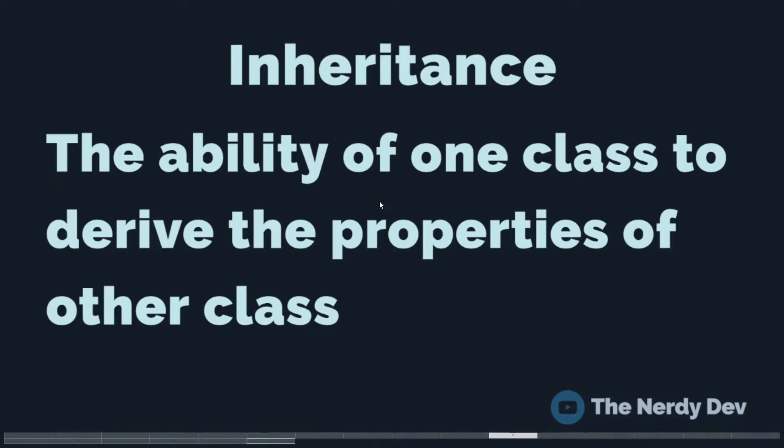Inheritance is defined as the ability of one class to derive or inherit the properties of another class. Using this concept we can easily model real-world relationships. The second thing to keep in mind is that it provides reusability of code, which means that you don't have to write the same code over and again — you write it once and whenever it is required you can reuse it.